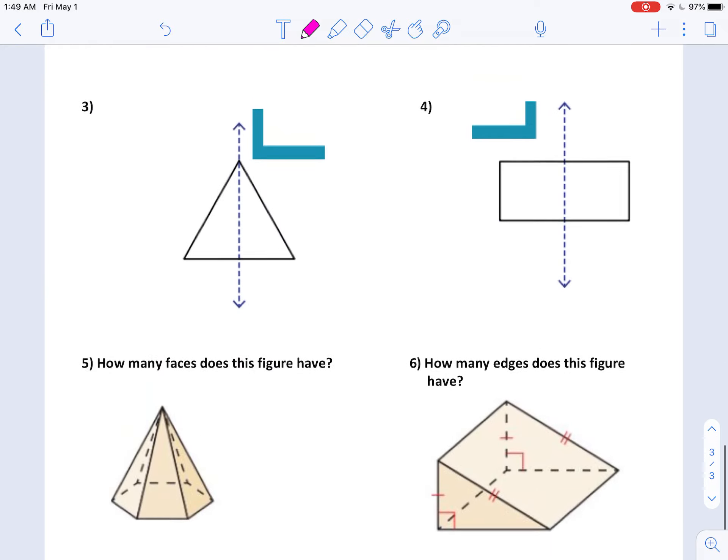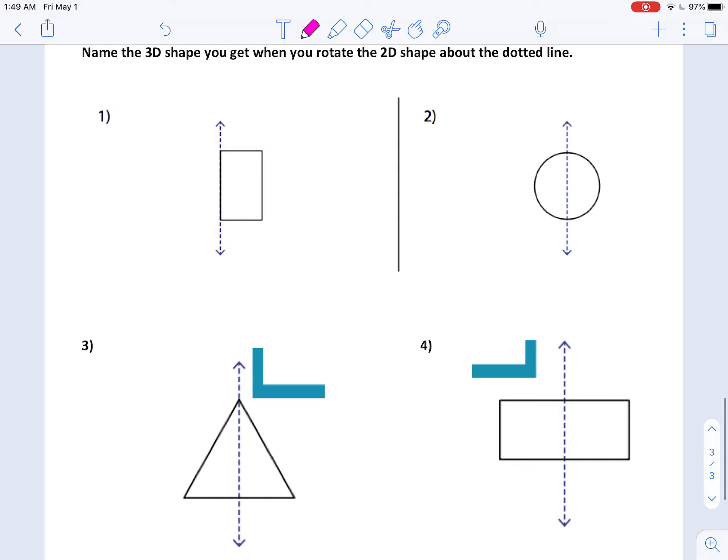And our very last two problem types. Talking about what do I get if I rotate this around. So if I rotate this around that dotted line. Do the same thing back here. And what shape did I get? Well, that's a cylinder. Not a polyhedron. But still a shape we should know.